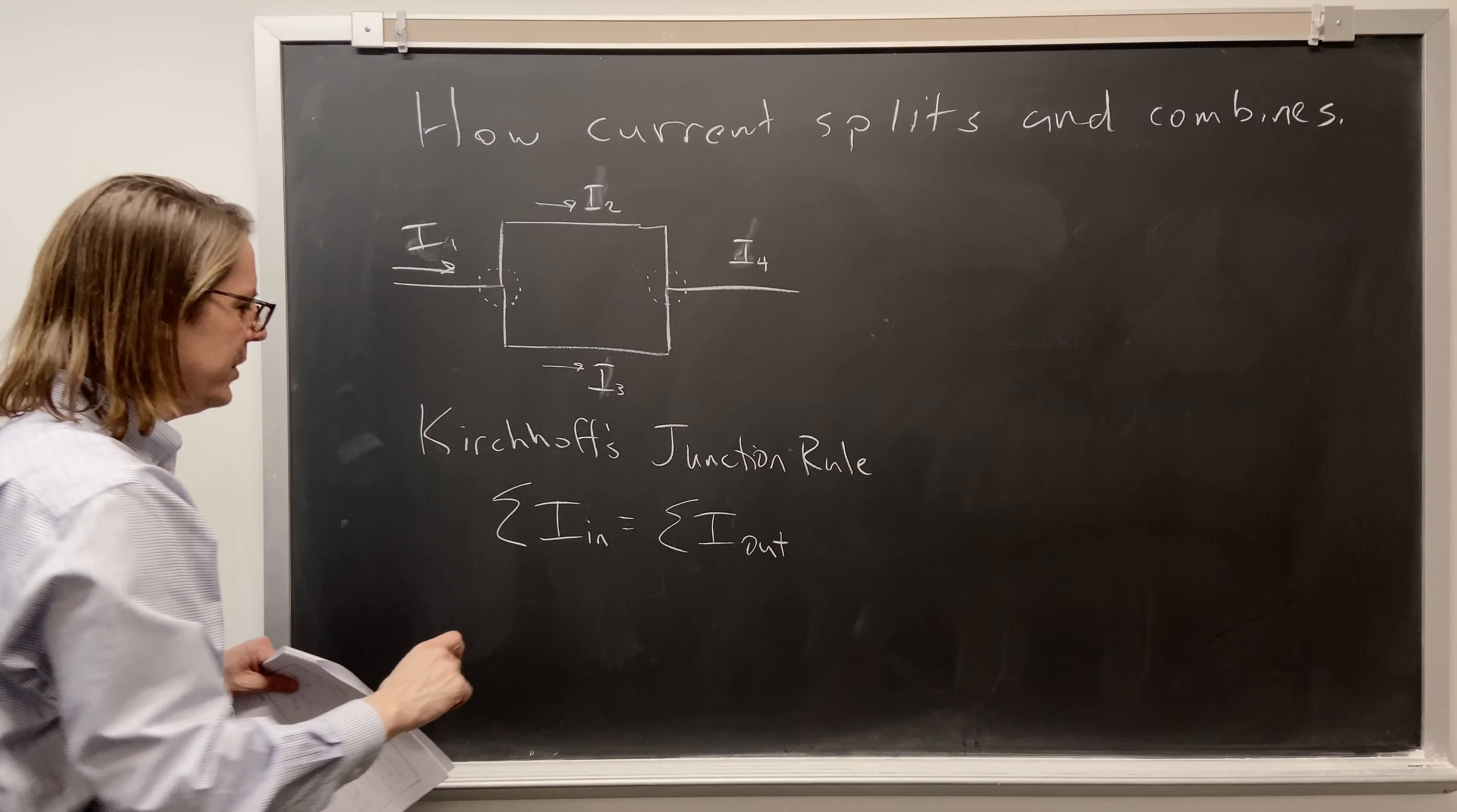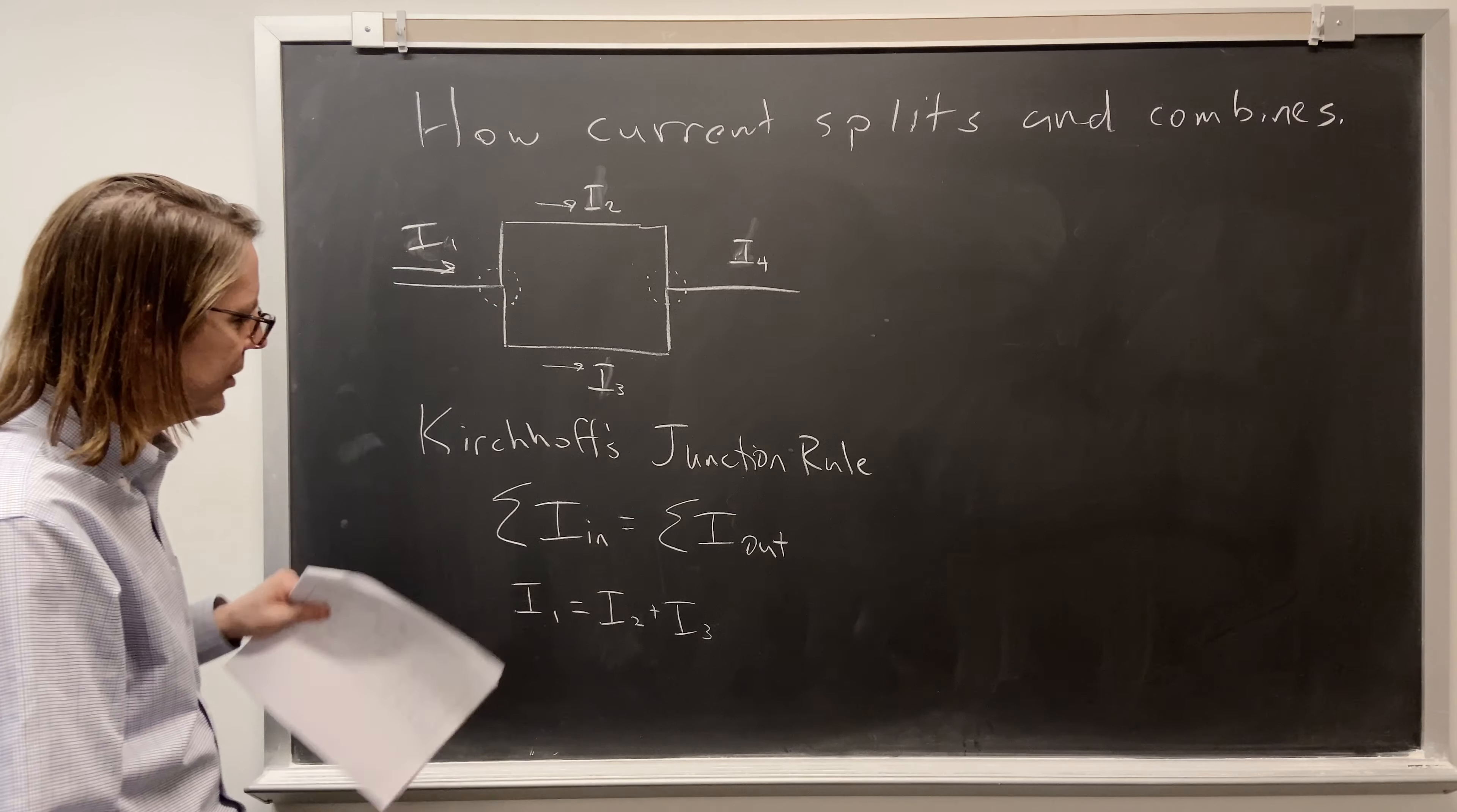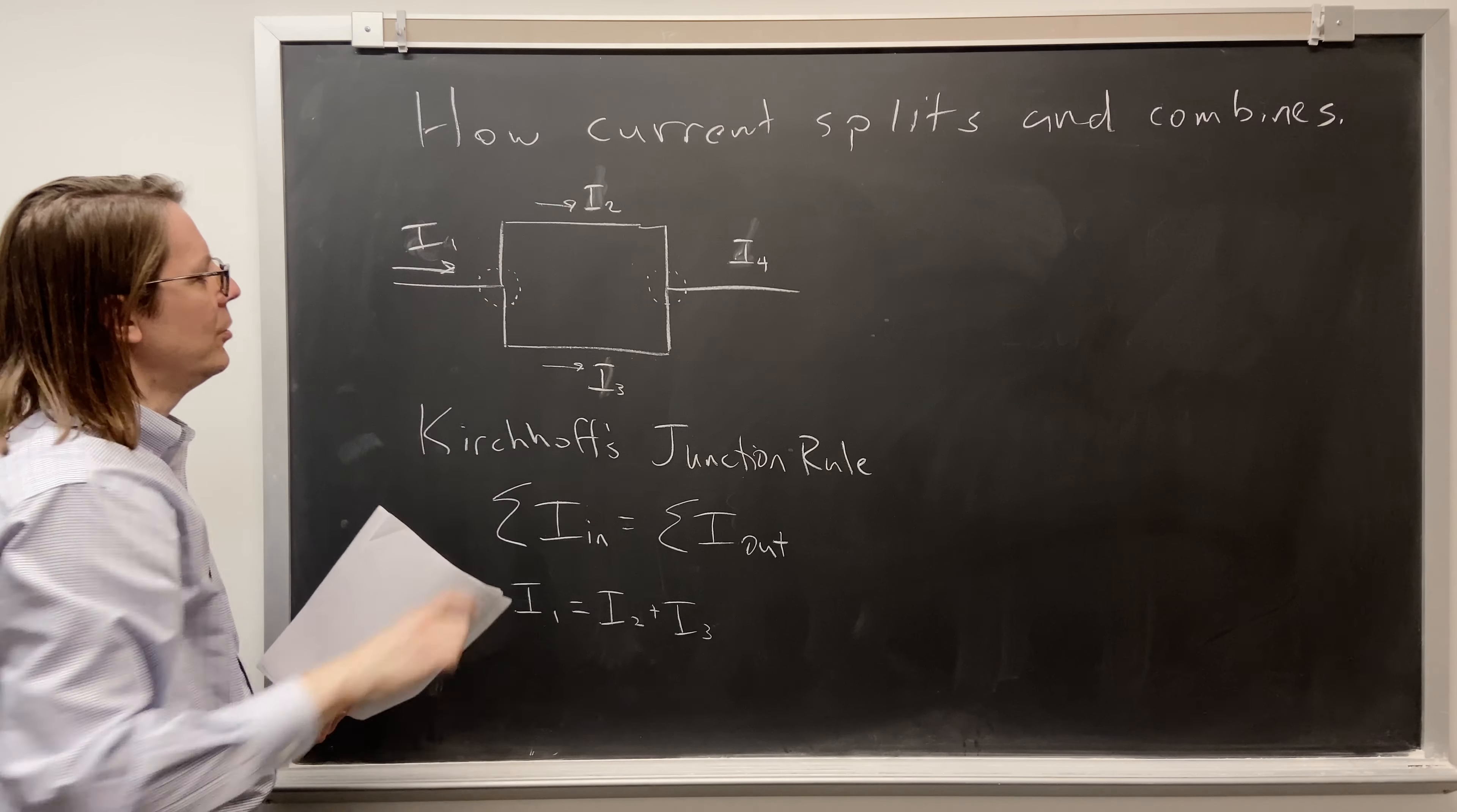At this junction, what is going in? I1 is going in, because that would go right there. What is coming out? I2 plus I3. So Kirchhoff's junction rule told us that I1 equals I2 plus I3, because we applied it right here. You can also use your intuition and conservation of charge and say, oh yeah, I1 must equal I2 plus I3.